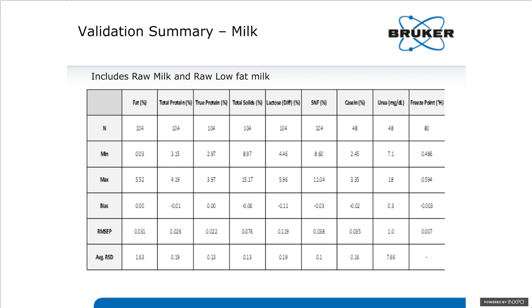Typically, the standard deviation that we get in replicate measurements on raw milk is around 0.005 to 0.007%.